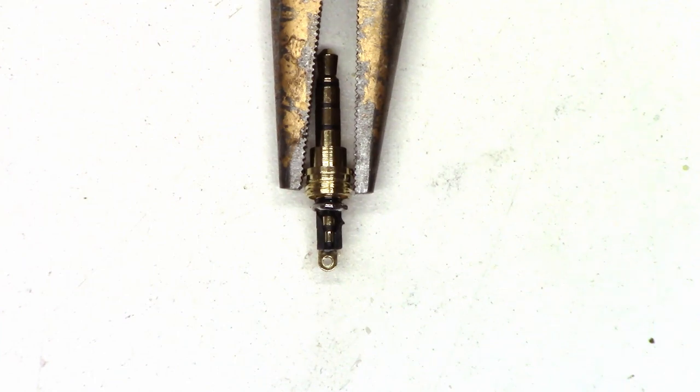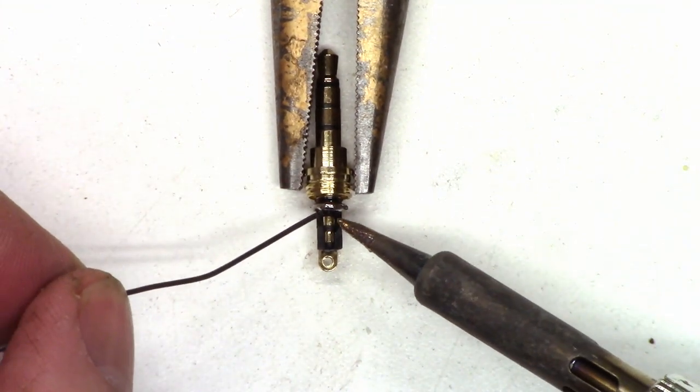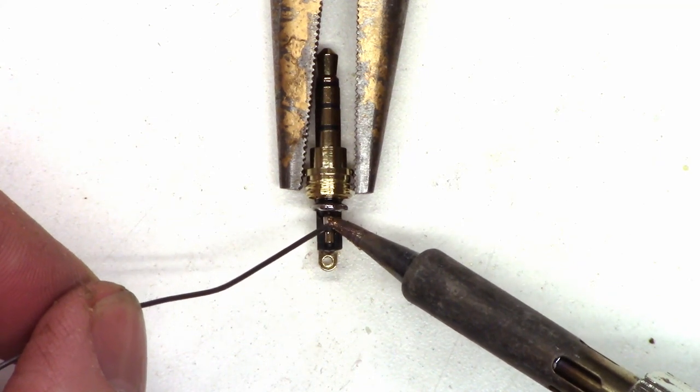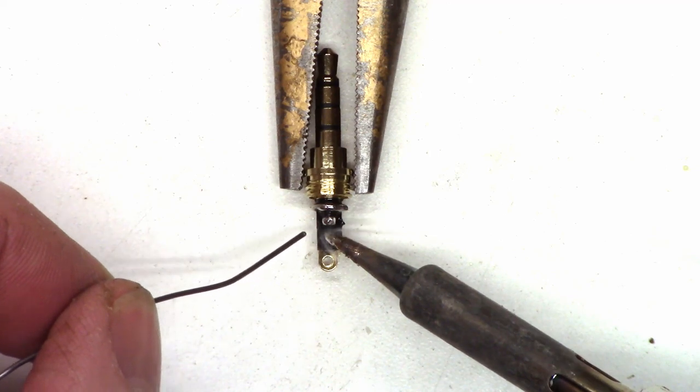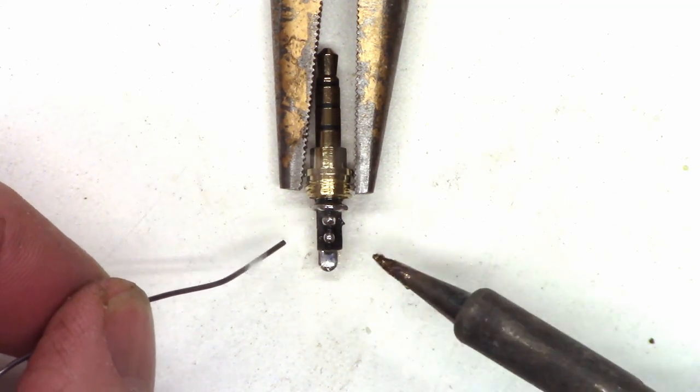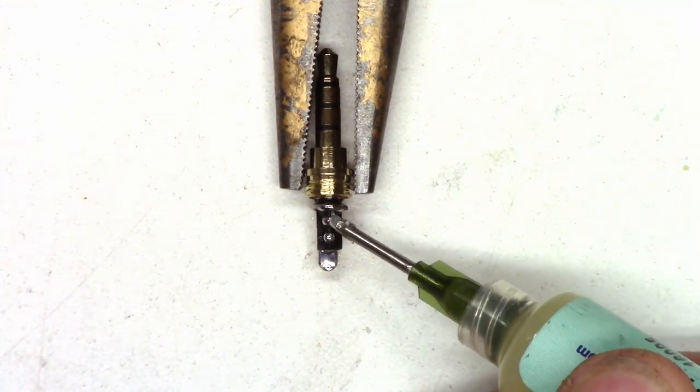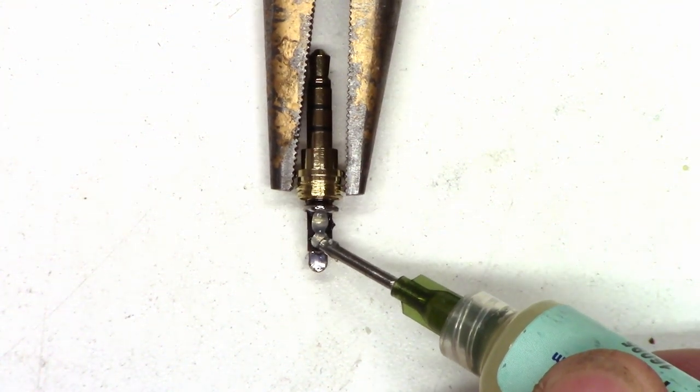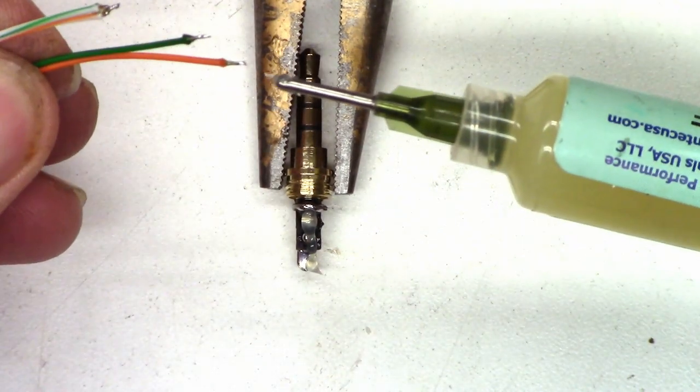Okay so next I'm going to go ahead and pre-tin the leads on these, the terminals, so they'll accept the solder much more easily. And then I'm going to go ahead and add a little bit of flux to make the solder flow better just to make it easier to solder. And I'm going to do the same thing on the leads.